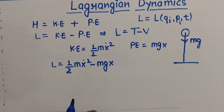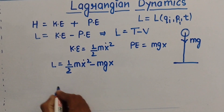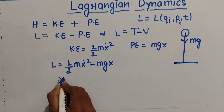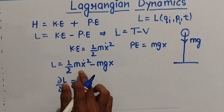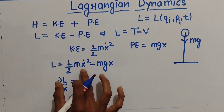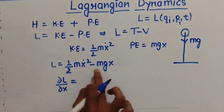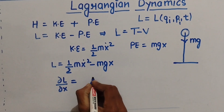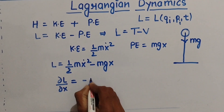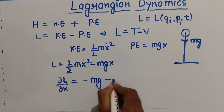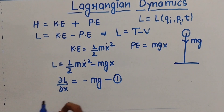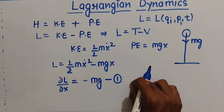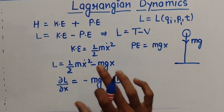Now I am going to differentiate with respect to x. What will I get? Del L upon del x. Since the kinetic energy term has no x, differentiating the potential term gives minus mg. Remember this equation — this is a very important equation.